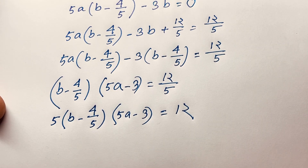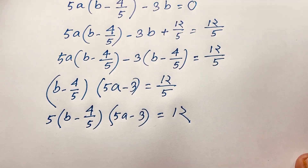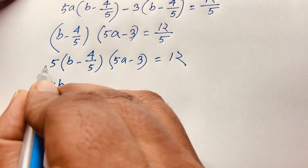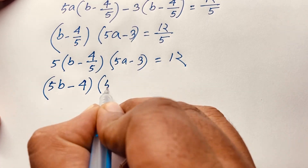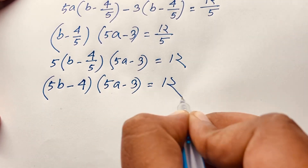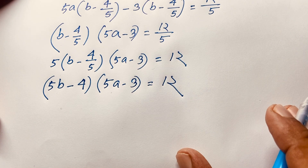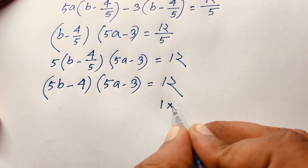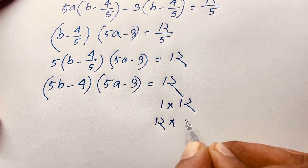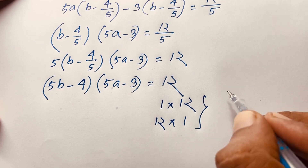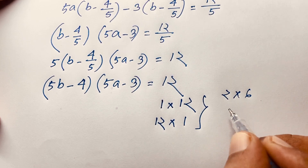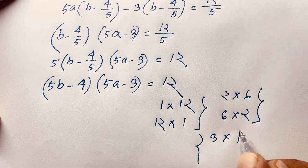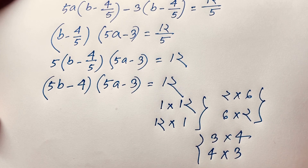We have the nice equation (5B minus 4)(5A minus 3) = 12. Now I find the factor pairs of 12: it can be 1 times 12, 12 times 1, 2 times 6, 6 times 2, 3 times 4, or 4 times 3. So we have three cases to check.